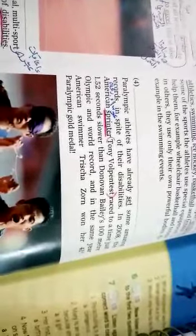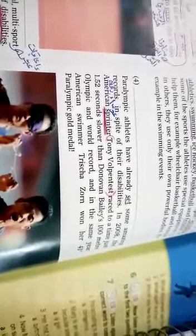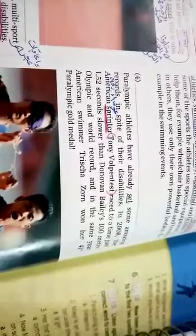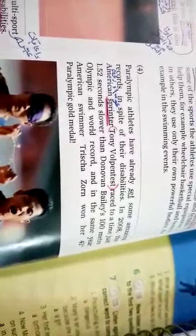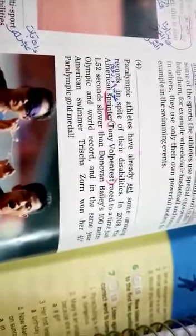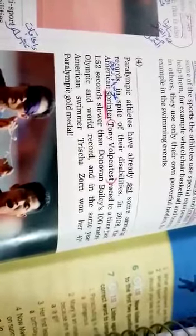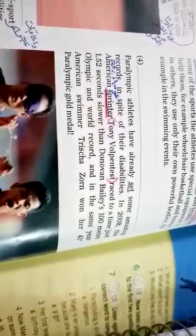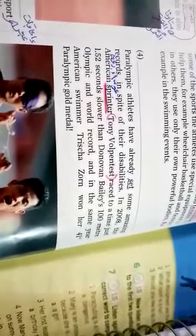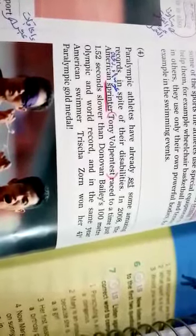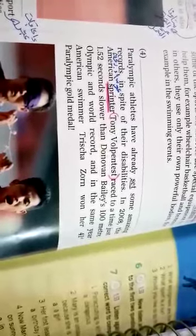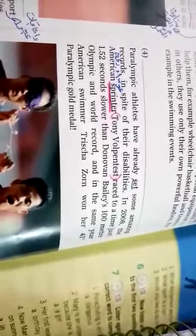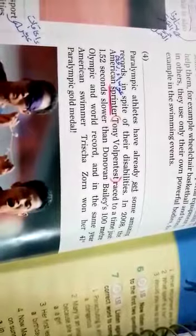Paralympic athletes have already set some amazing records in spite of their disabilities. In 2008, the American sprinter, Tony Volopin Test, raced to a time just 1.52 seconds slower than Donovan Bailey's 100 meter Olympic and World Record. And in the same year, American swimmer, Trisha Zorn, won her 41st Paralympic Gold Medal.